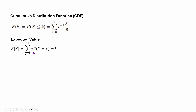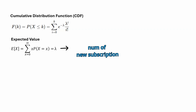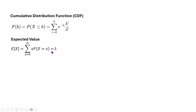The expected value is computed by summing x from 0 to infinity, and that gives us lambda. So lambda is the rate parameter — the number of new subscribers per day on average — and that is exactly what we expect. Think about it intuitively: if I observe that I get 100 new subscribers per day on average, then on a new day I obviously expect to get 100 new subscribers, because that is my average. And that is what the math gives us. The variance of this distribution is also lambda.